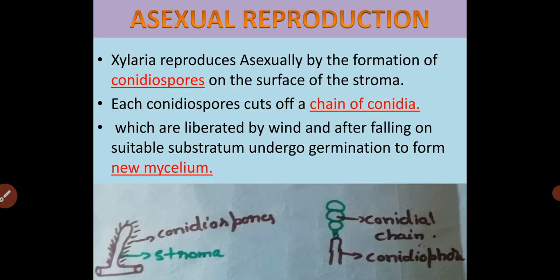Xylaria reproduces both by asexual and sexual methods. Asexual reproduction takes place by the formation of spores called conidiospores, which are produced on the surface of the stroma in chain form. These are liberated by wind and after falling on a suitable substratum they germinate and produce new mycelium.